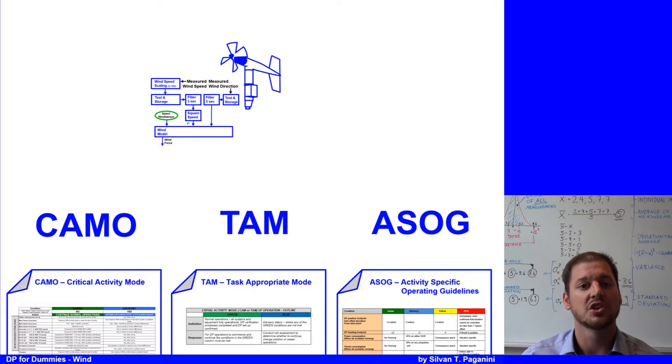In summary, CAMO shows how to configure the DP system, the TAM can be used when the worst case failure can result in a loss of position, and the ASOG is used for a specific DP operation.